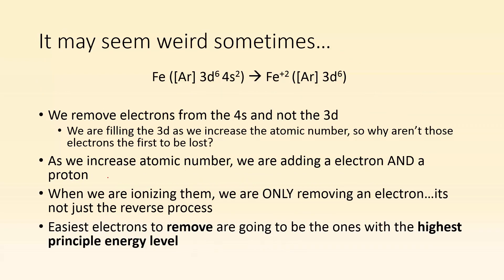So it may seem weird sometimes because if we're taking a look at iron, for example, as we're adding protons and electrons, we're doing it in a different order than we're removing electrons. So we remove electrons from the 4s and not the 3d. So even though we're filling the 3d as we increase the atomic number, why aren't we losing electrons from the 3d then? Well, as we increase an atomic number, we're adding an electron. That should be an electron and a proton. But when we're ionizing them, we're only removing an electron. It's not just a reverse process. So when we're going left or right across the periodic table, we're adding a proton and an electron. But when we're talking about ionization, we're just removing an electron. We're not messing with the protons. So the easiest electrons to remove are going to be the highest principal energy level.